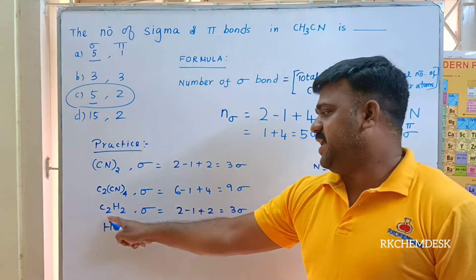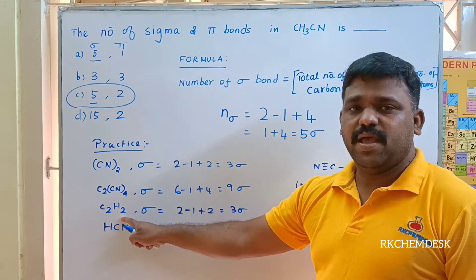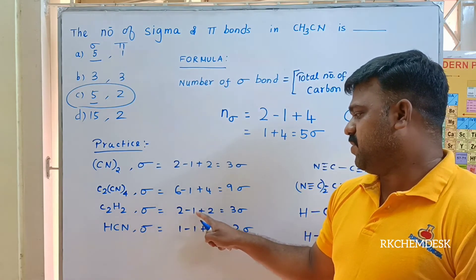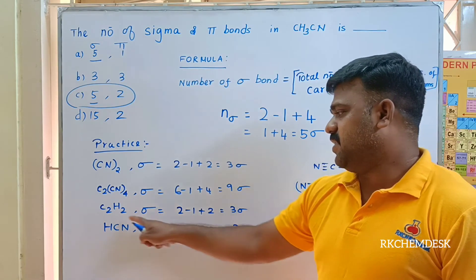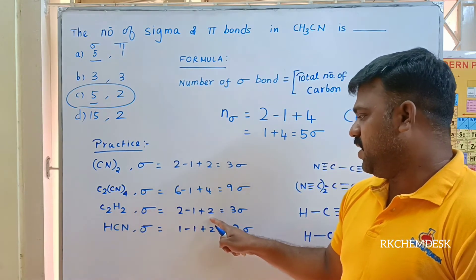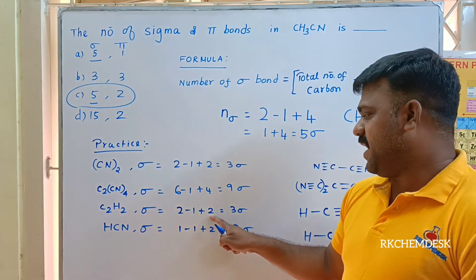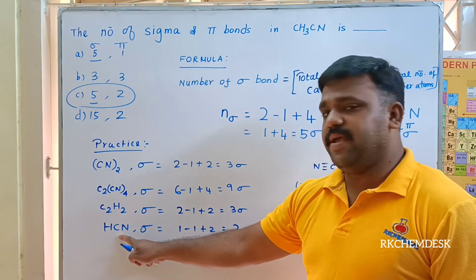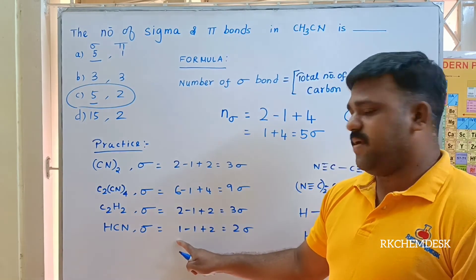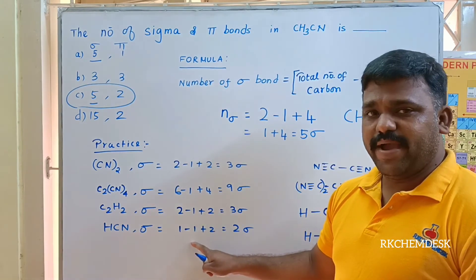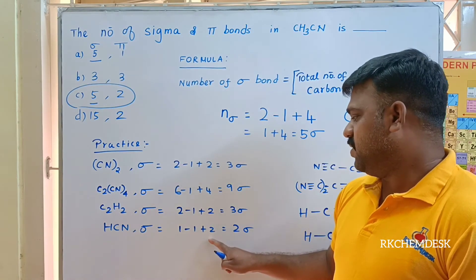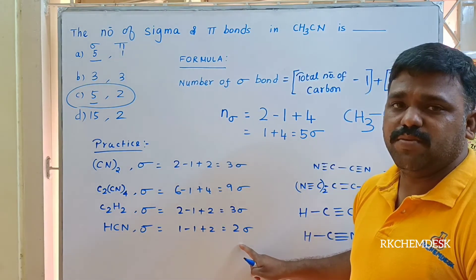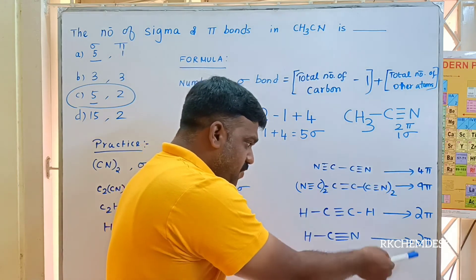For C₂H₂: two carbons minus one plus two hydrogens equals one plus two, giving three sigma bonds. For HCN: one carbon minus one plus two other atoms — one nitrogen, one hydrogen — gives two sigma bonds.